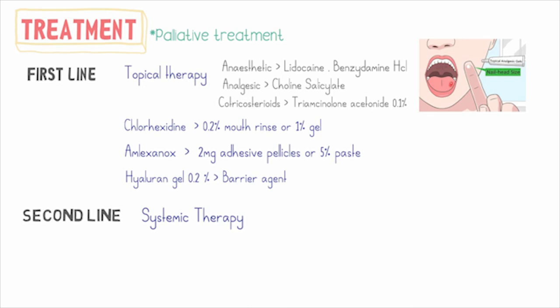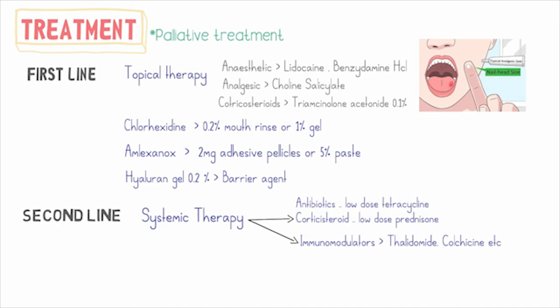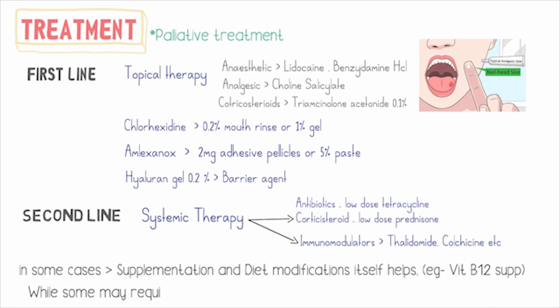The second line of treatment includes systemic therapy, which is not usually given to all patients — only in some complex cases. You may prescribe antibiotics, corticosteroids, and immunomodulators. In many cases, supplementation and diet modification itself helps. Some cases may also require laser ablation or chemical cautery.